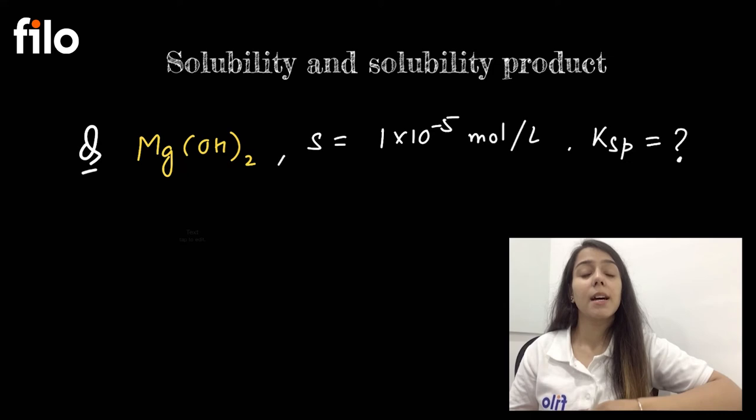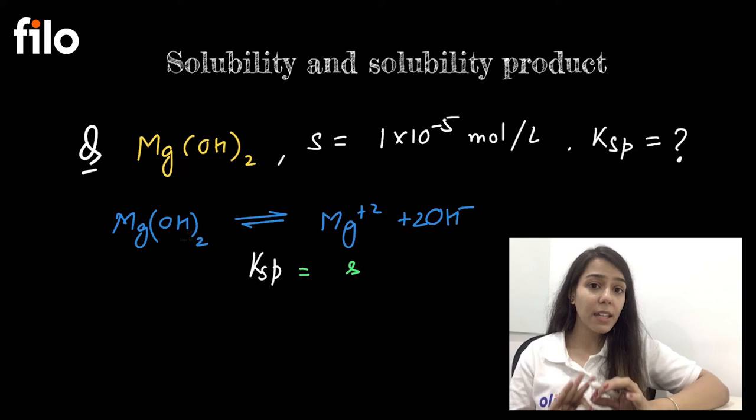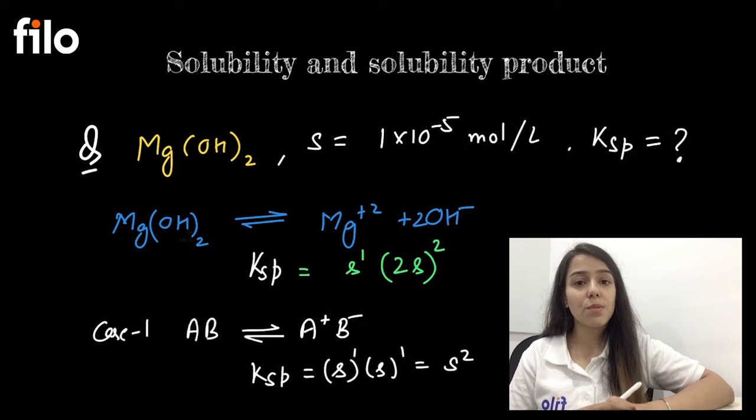If I put Mg(OH)₂ in a solvent, then what will happen? It will break as Mg²⁺ ions plus 2OH⁻ ions. So Ksp is nothing but, the complete definition is, it is the ionic product of the ions that are dissolved raised to the power of their stoichiometric coefficients. In the first case we knew that it was the salt of 1 is to 1, the previous case that we discussed, so in that case it was just 1 only.